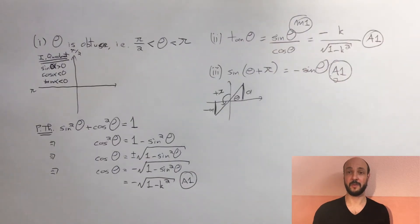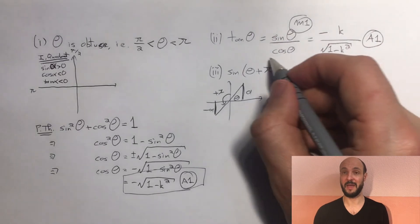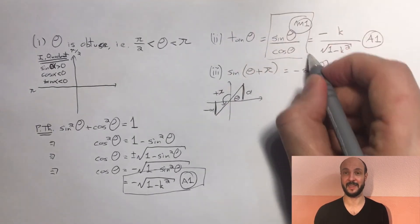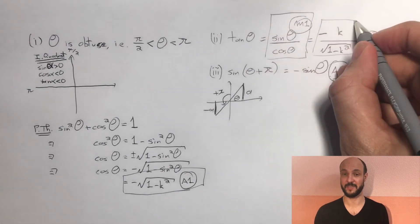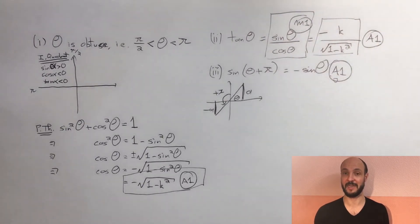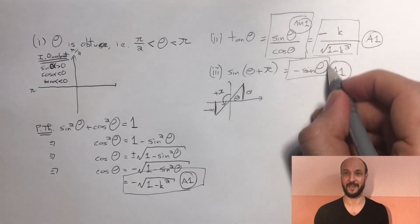So in terms of the marking, there were four marks available on this question. The first part had just one accuracy mark, so we had to get it completely right. The second part had two marks, a method mark for identifying that tan theta was equal to sine theta over cosine theta, and an accuracy mark for putting the final right amount in as minus k over the square root of 1 minus k squared. And then the third part had just one accuracy mark for getting it correct.